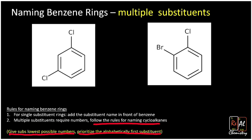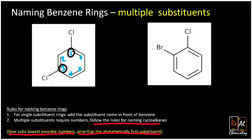We'll prioritize the alphabetically first substituent — if we have two choices, we go with the one that comes first in the alphabet as the lowest number. For this chlorine-containing compound on the left, we have two chlorines. We could go clockwise or counterclockwise; the blue numbering gives chlorine positions one and three, which is far better than one and five. So we name it 1,3-dichlorobenzene.